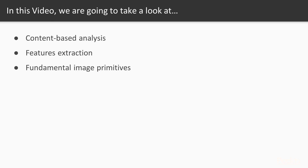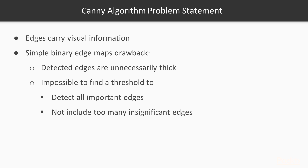In this video we will perform content-based analysis of an image. It is necessary to extract meaningful features from the collection of pixels that constitute the image. Contours, lines, blobs, and so on are fundamental image primitives that can be used to describe the elements contained in an image. Edges carry important visual information since they delineate the image elements, and for this reason they can be used, for example, in object recognition.